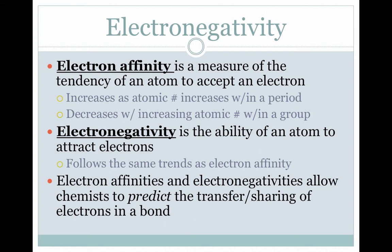First we're going to talk about definitions of electron affinity and electronegativity. They sound very much the same, but they're actually quite different. Electron affinity is the measure of a tendency of an atom to accept an electron. It increases with atomic number across a period and decreases down a group — the same trend we've been talking about with electronegativity and ionization energy.